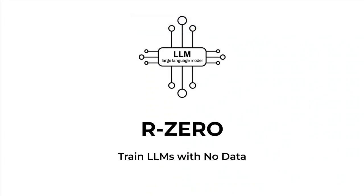Hi everyone, welcome back to Data Science in Your Pocket. Today we are talking about a very important research paper called R0, which helps you train LLMs without any data. Yes, you heard it right. This is quite similar to GANs, where you train a discriminator and generator model. Here also, you train two models that compete with each other. In this short video, I will be explaining the entire paper and why it is revolutionary.